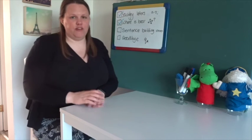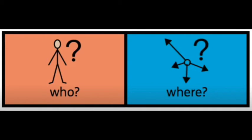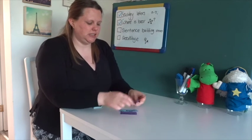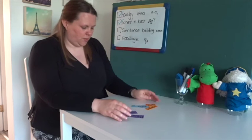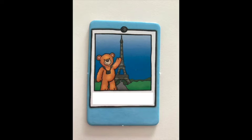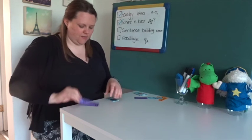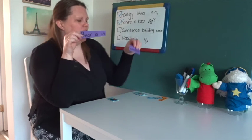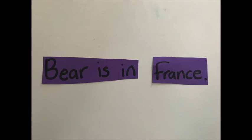Those are our three pictures, so 'Where Is Bear?' has finished. Now we're going to do some sentence building. Remember the order of our sentences: the orange one is first for who, and blue is next for where. I've actually created three different sets of sentences and you can do these however you want. So if we take the picture where he's at the Eiffel Tower — do you remember which country bear is in? France. I have 'bear is in' and the only thing I need to match with that is the word France.